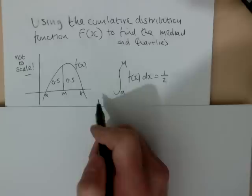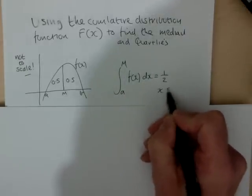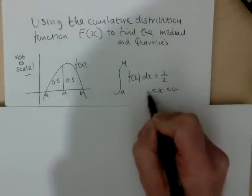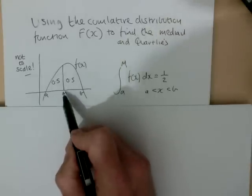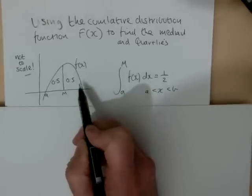the values from which x exists. X exists between a and b, and m will be such that the probability that we're less than m is 0.5, the probability that we're greater than m is also 0.5.